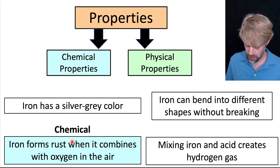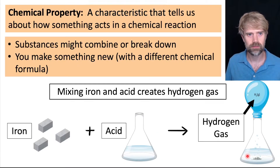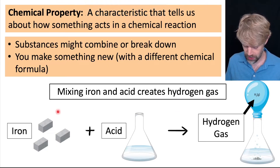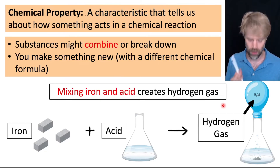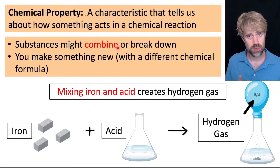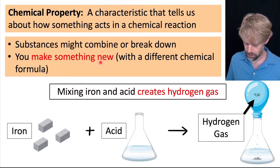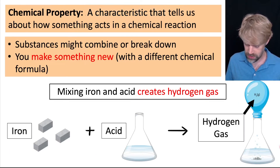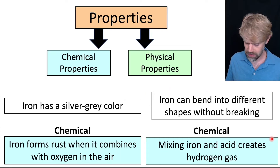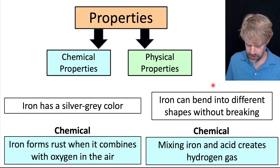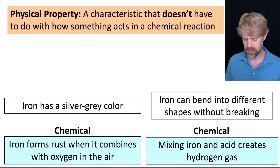Do you see any other properties that are chemical? How about this one: mixing iron and acid creates hydrogen gas. What are the clues that this is a chemical reaction? Well, iron and acid are combining, and most importantly, you make something new — hydrogen gas. You don't even need to know the chemical formulas to know that something new is being made and the substances are changing. So this is definitely a chemical reaction, and that means this is a chemical property.